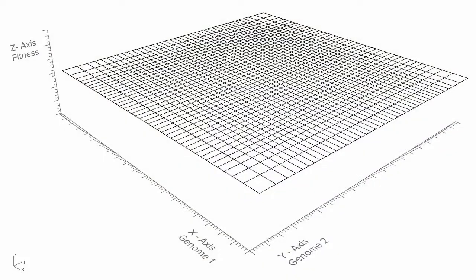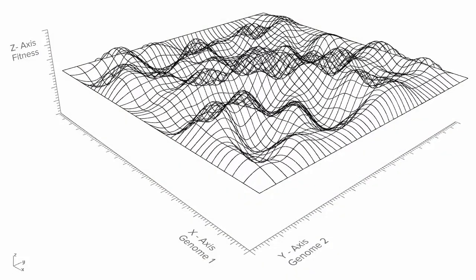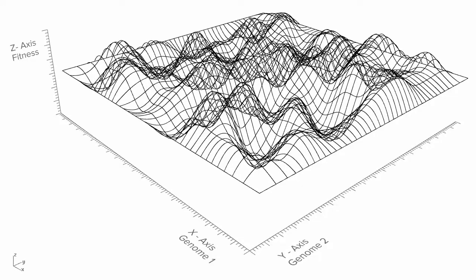The way evolutionary computing works can best be imagined through this intuitive metaphor of a landscape with peaks and valleys. On the X and Y axis, we have our set of input variables, or genomes, and the Z axis represents the fitness — in other words, how good or bad our combination of genomes is. So a peak represents a range of successful genomes, and a valley belongs to less fit combinations.